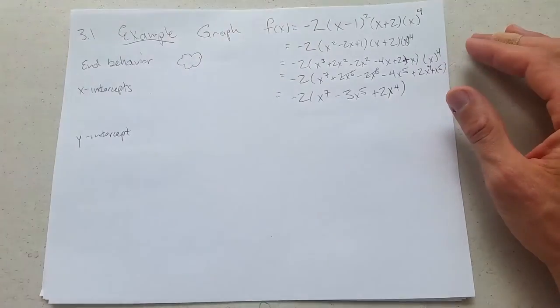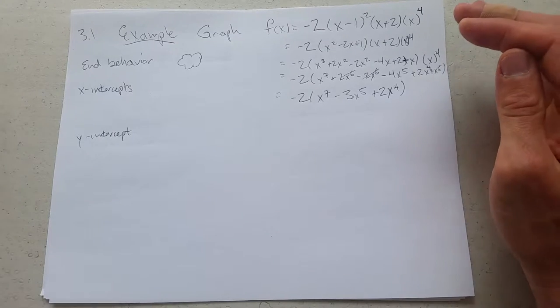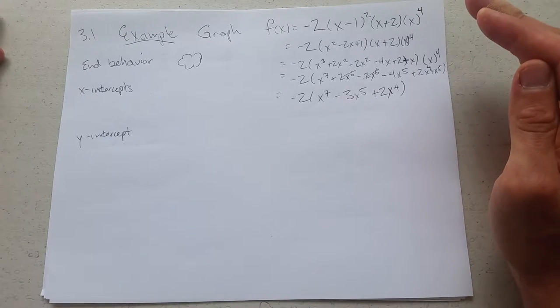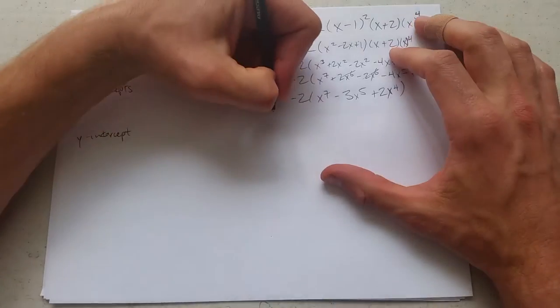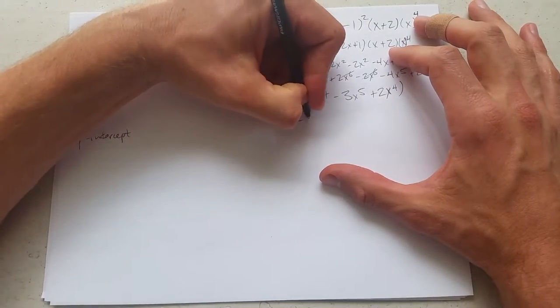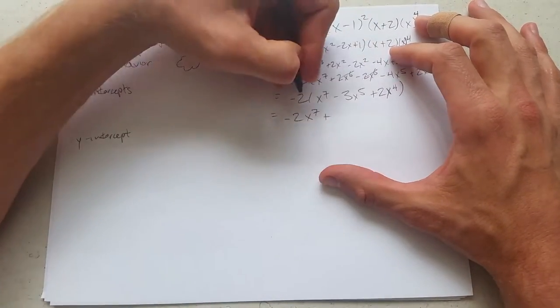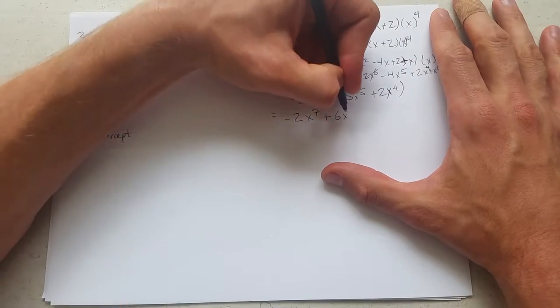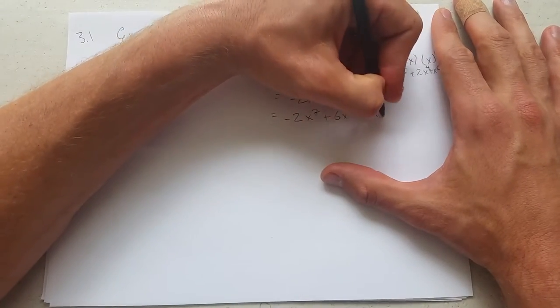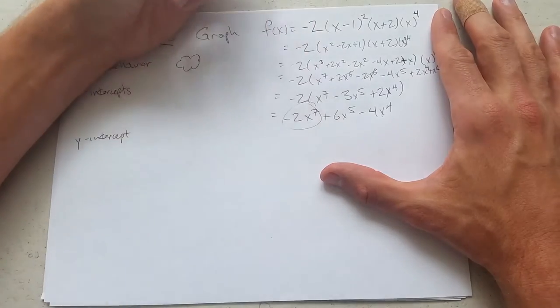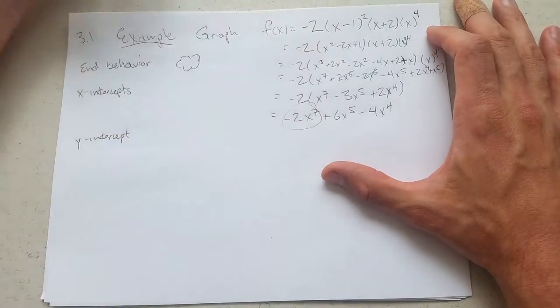So I did this because I want to show you that it sucks. There's a better way to go here. Now, last step, negative 2x to the 7th. I'm just distributing negative 2 in, plus 6x to the 5th, minus 4x to the 4th. What's the leading coefficient? Minus 2x to the 7th.